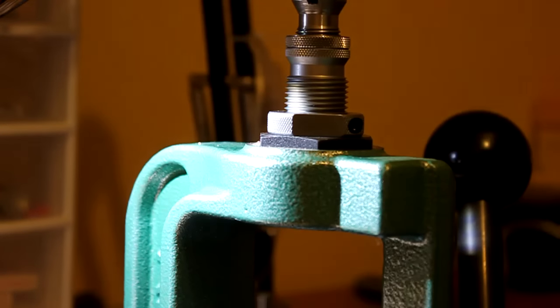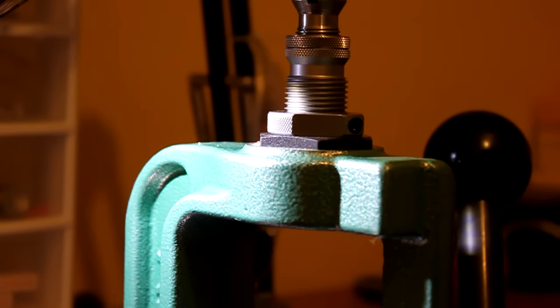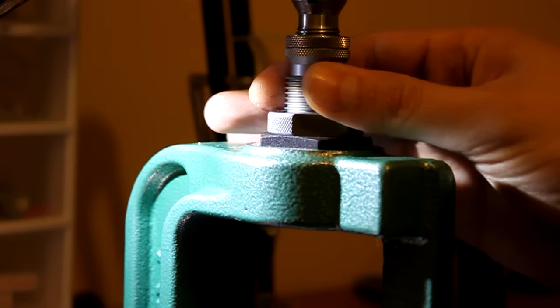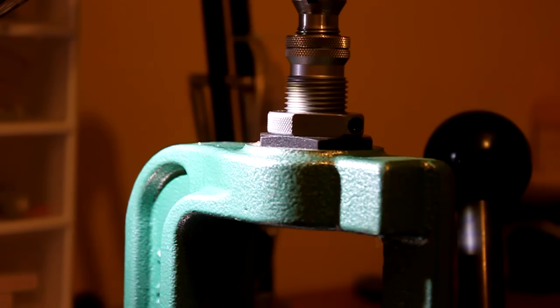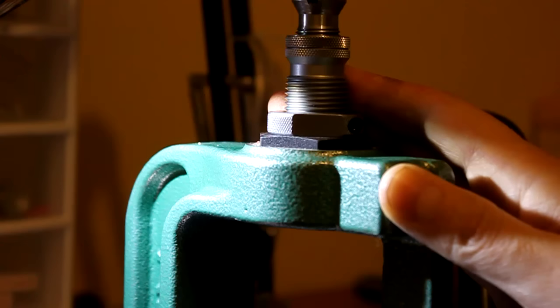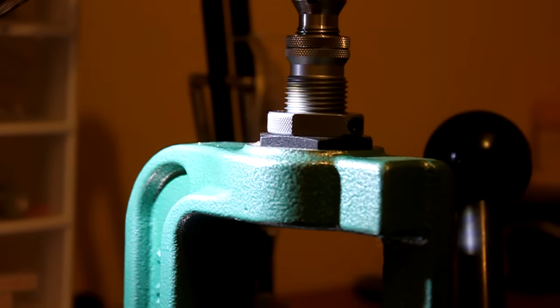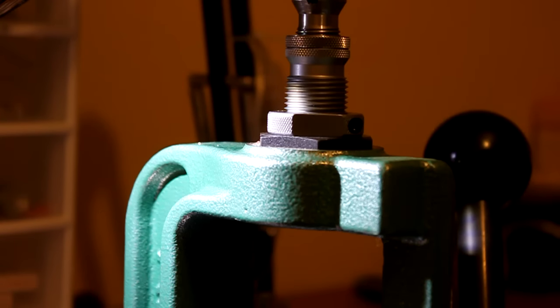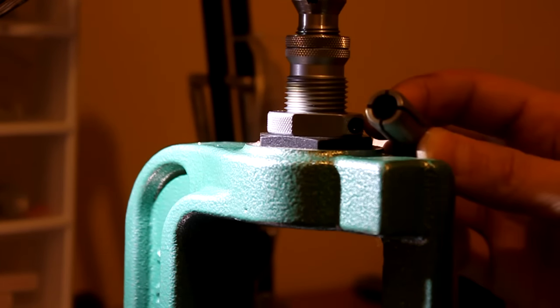This method works really well for pulling bullets without scarring them. It does take a little bit of work to get this die adjusted. It's not too difficult but I've heard of people having trouble but it's all a matter of getting it adjusted. Once you learn how to do it, it's not difficult at all. These aren't terribly expensive but they are significantly more than a kinetic style puller. If you're going to be doing a lot of reloading or bullet pulling, definitely worth the investment. Once you buy the die assembly, then the only thing you need to buy to do different calibers is the different collets.